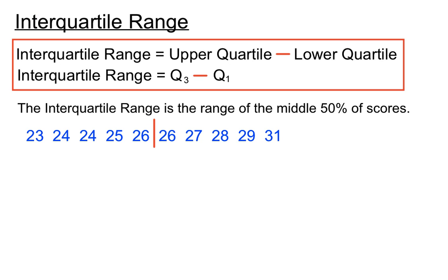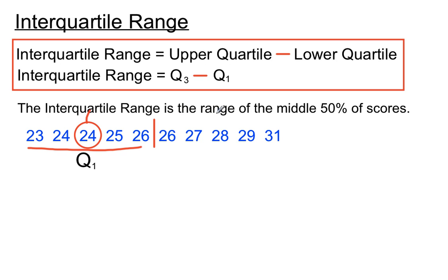We're going to concentrate on the first half and the second half to find the middle of those as well. That will help us find what we call the upper quartile and the lower quartile. This lower quartile is the median of our bottom half. We were left with five scores, so the median, or the middle score in that first half, is going to be the third score — we call that Q1, quartile 1. It's chopping this up into four bits, that's why we call it a quartile.